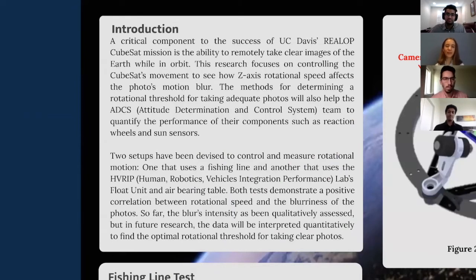A critical component to the success of our CubeSat is the ability to take clear pictures of the Earth from space. And there are many things that make a clear photo, things like lighting, exposure, image size, but what our research is primarily concerned with is how the actual movement of the satellite is going to affect the motion blur of the photos we're taking. Essentially, what we want to figure out is the maximum speed that the satellite can be spinning that will still be able to yield relatively clear photos.